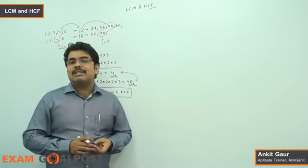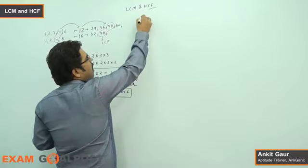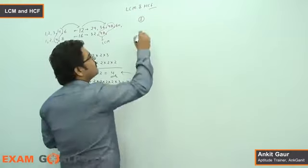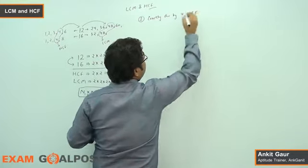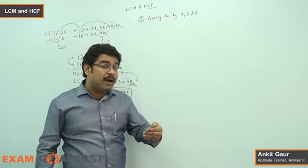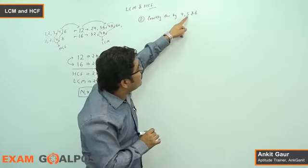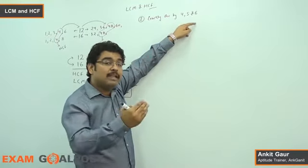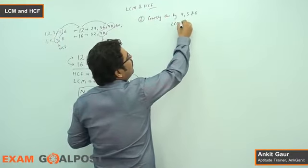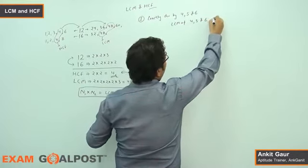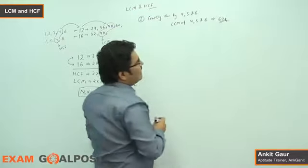Let's see how LCM is used with example questions. For example: what is the smallest possible number exactly divisible by 4, 5, and 6? I am asking for a number that is divided exactly by 4, 5, and 6 — that means we need the Least Common Multiple. So the answer is LCM of 4, 5, and 6, which is 60. The smallest possible number exactly divisible by 4, 5, and 6 is 60.